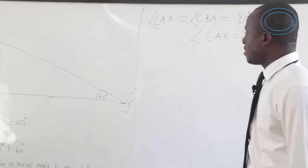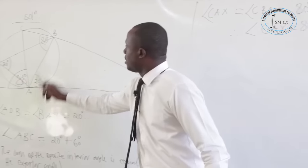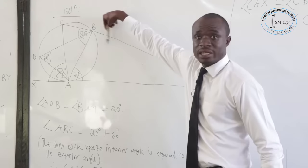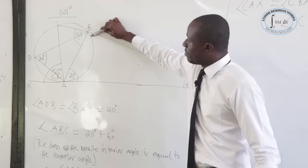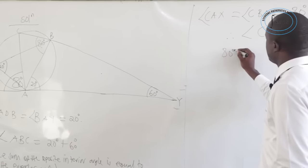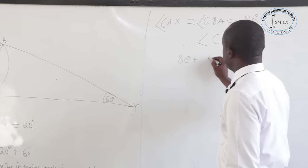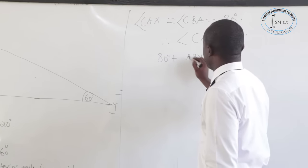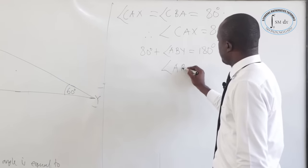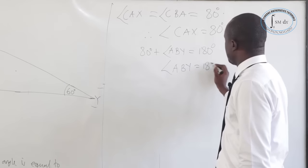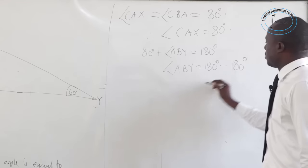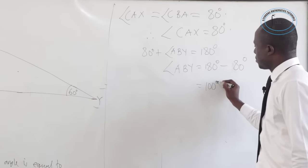For angle ABY: sum of angles on a straight line equals 180 degrees. Since angle ABC is 80 degrees, angle ABY equals 180 minus 80, which is 100 degrees.